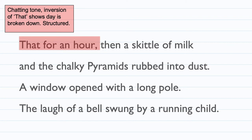Remember, inversion is when you would start a sentence normally — for example, 'the cat sat on the hat' — and then change the structure to emphasise a certain word. So instead of 'the cat sat on the hat,' you might say 'on top of the hat sat the cat.' Instead of the cat being highlighted, the hat is. So 'that for an hour' places emphasis on 'that,' showing the structure of the school day.